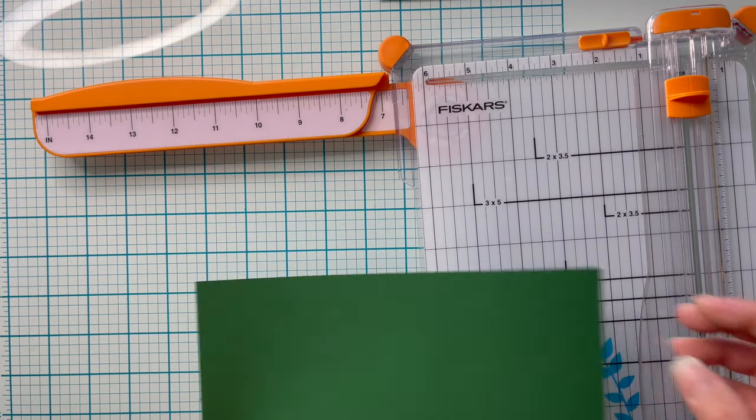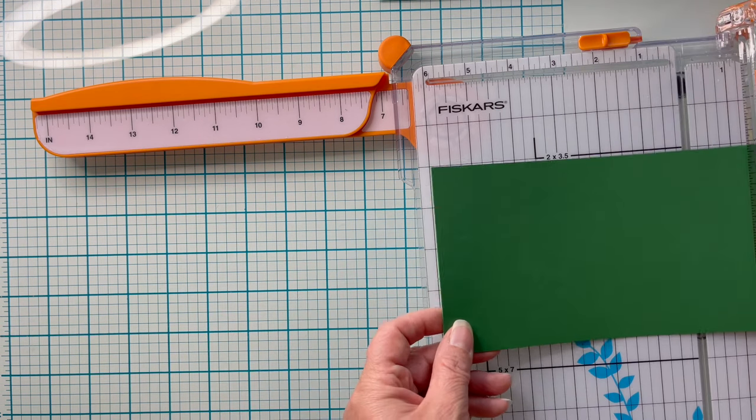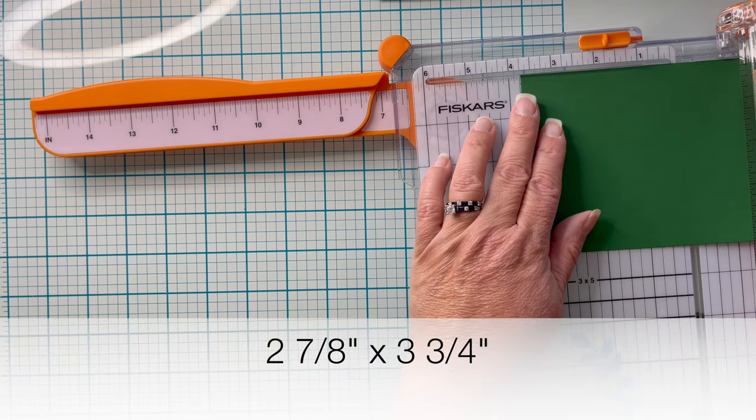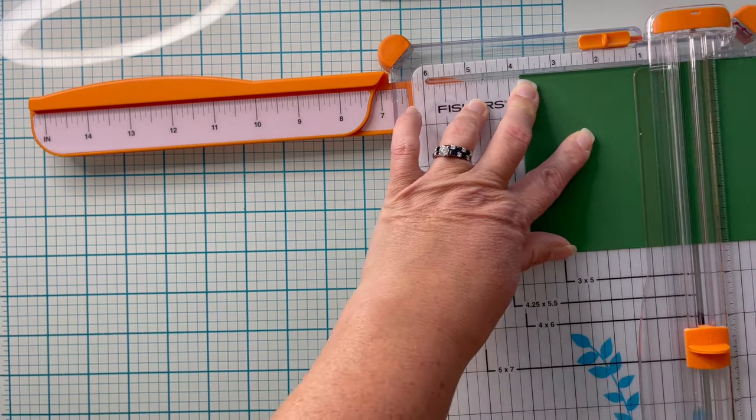Go ahead and set that piece aside and using the remaining green paper you're going to cut down your green card layer. That one is going to measure 2 and 7/8 inches by 3 and 3/4 inches.